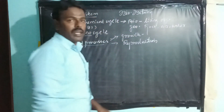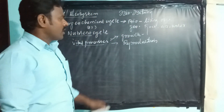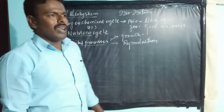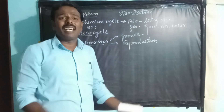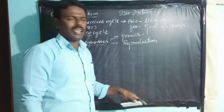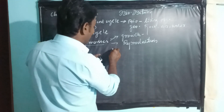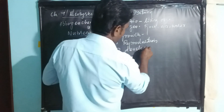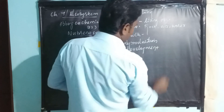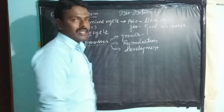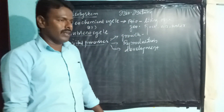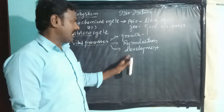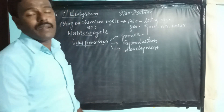Growth is one important process. It involves a lot of cell divisions, which require nutrients. Another vital process is development — for example, in plants, the development of leaves, the formation of flowers, and so on, all require nutrients.